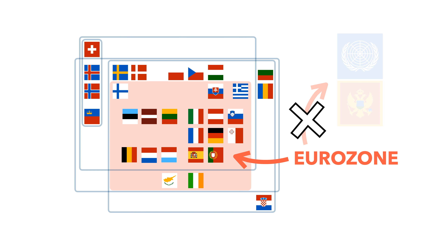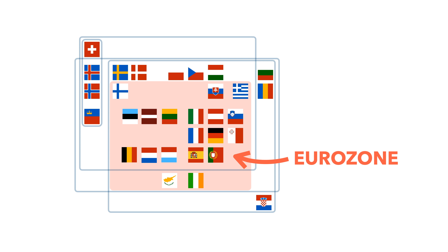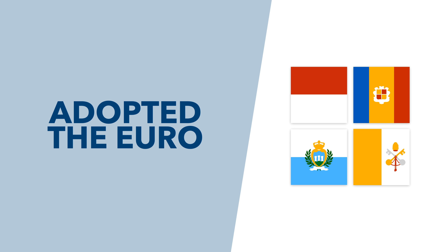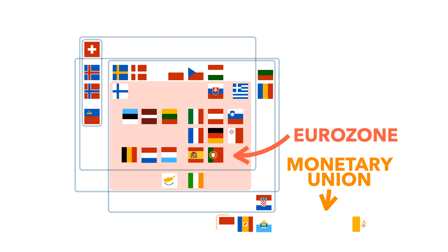Four countries have gone the official route though, those being Monaco, Andorra, San Marino, and the Vatican. These nations have, of their own accord, adopted the Euro as their currency through a formal agreement with the European Union.